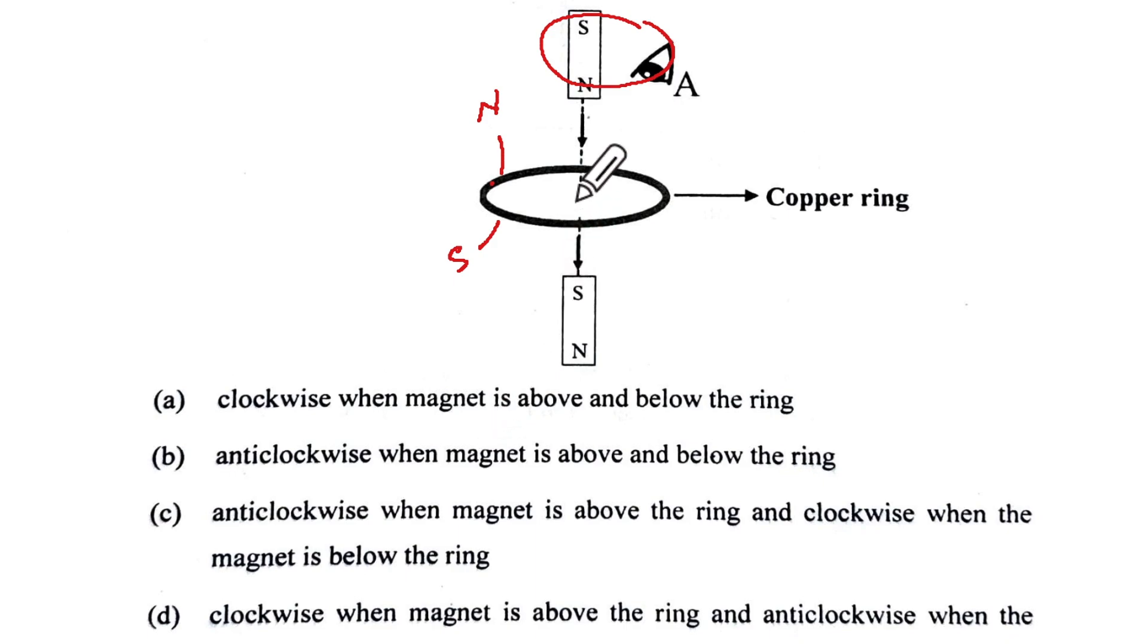When it goes through the ring and south is going away, now this surface becomes north and this surface becomes south. So anticlockwise when above and clockwise when below, and that is option C.